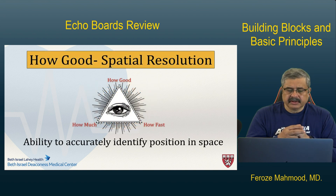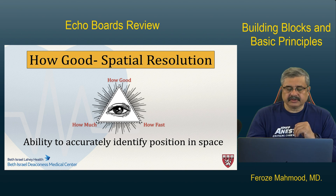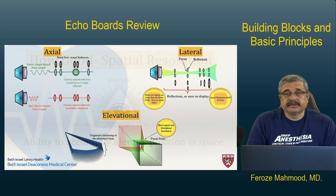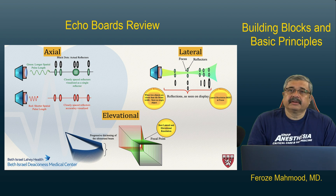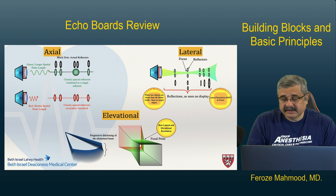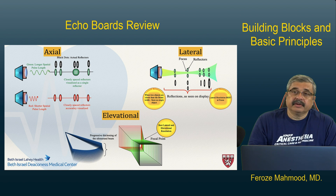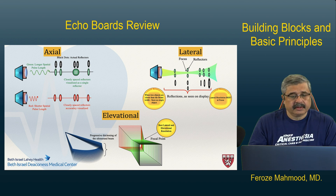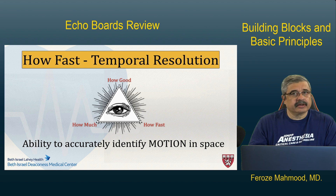Spatial resolution is defined as your ability to accurately identify a position in space. There are three types: axial resolution — your ability to see things front to back, determined by your spatial pulse length; lateral resolution — the ability to identify the distance between two objects lying side by side, determined by the narrowest point of the beam at the focal zone; and elevation resolution — correctly identifying whether a structure is above or below the scan plane. Temporal resolution is your ability to accurately identify motion in space, which is one of the most important things in echocardiography.